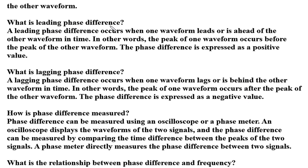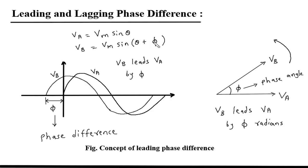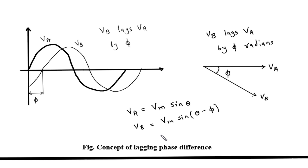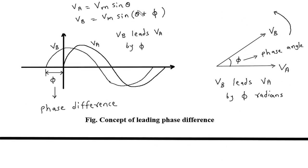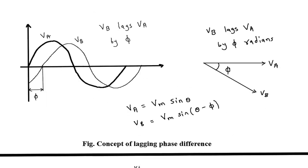In the case of leading phase difference, it is expressed as a positive value. For lagging phase difference, it is expressed as minus Phi or negative Phi. So lagging is negative phase difference and leading is positive phase difference. In the case of lagging phase difference, Vb is behind Va, so Vb lags Va by Phi, where Phi is the phase difference and it is negative.